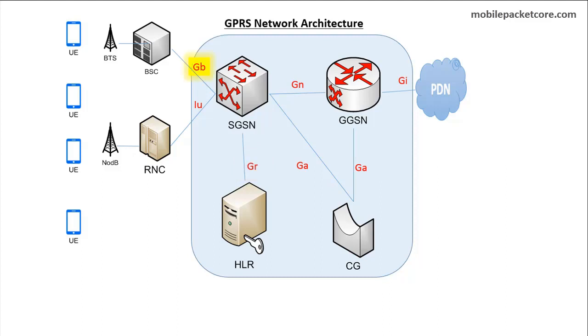The GB interface is the interface between the SGSN and the BSC. And the IU interface is the interface between the SGSN and the RNC.